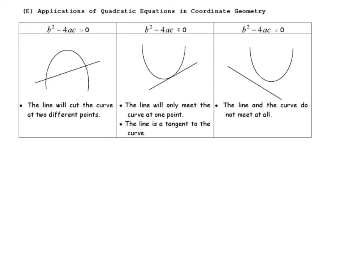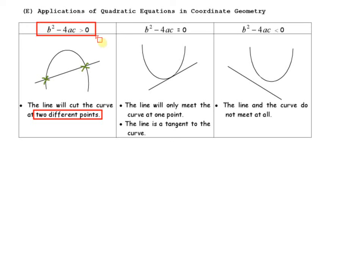Welcome to the last part of quadratic functions — the applications of quadratic equations in coordinate geometry. You should have a straight line and a curve. The first condition is where the straight line intersects the curve at two different points. For this, you use the condition b squared minus 4ac greater than 0.